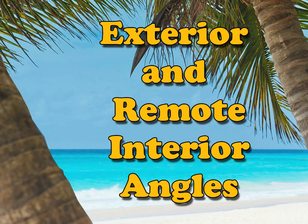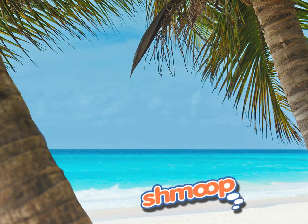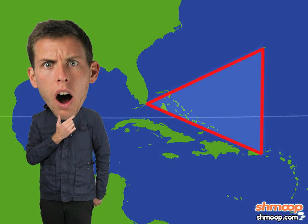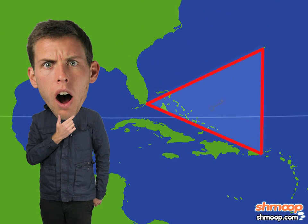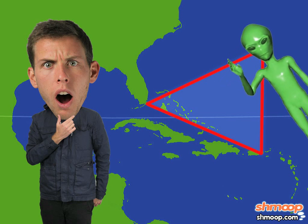Exterior and Remote Interior Angles, a la Shmoop. Ever since you were a little kid, the Bermuda Triangle has intrigued you. Come on, a mysterious triangle in the Atlantic where pretty much everything disappears, possibly into alternate dimensions? Awesome.